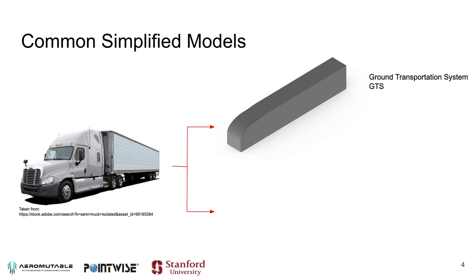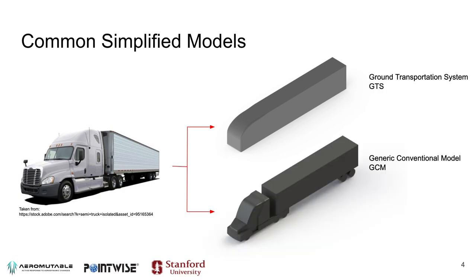The wake is not the only source of drag, and to study other parts of the vehicle that contribute to aerodynamic drag, the GCM — the Generic Conventional Model — was developed. This new model brings many features of a tractor trailer: it has a tractor shape, it has wheels, it introduces the gap between the tractor and the trailer, and it even has a small wheel train for the back wheels of the trailer, bringing the computational model closer to reality.